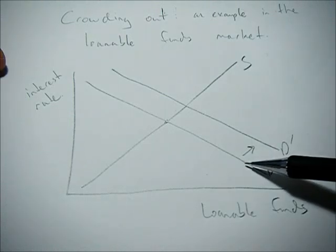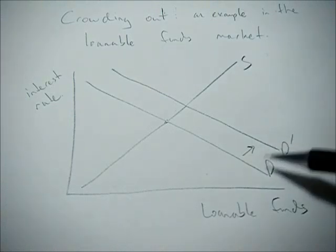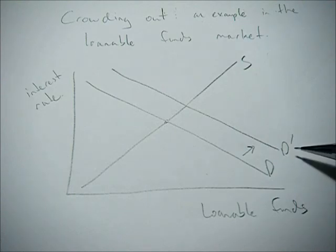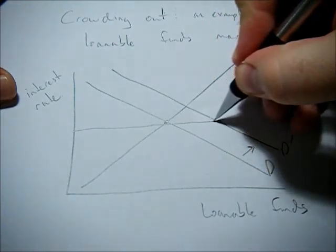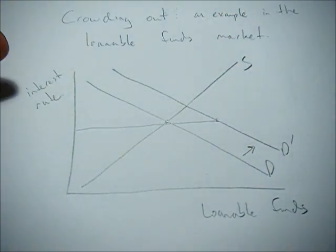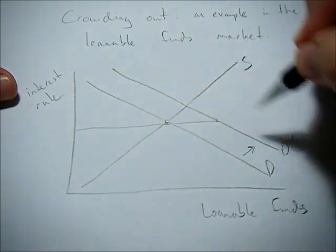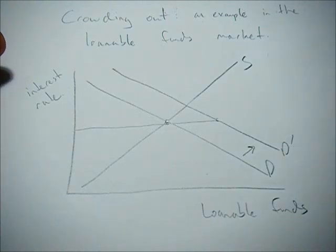So when the government borrows money, we see an increase or a shift in our demand for loanable funds. Now, we were at some equilibrium interest rate, and you can see now that after the shift, after the expansionary fiscal policy, there's now a gap.